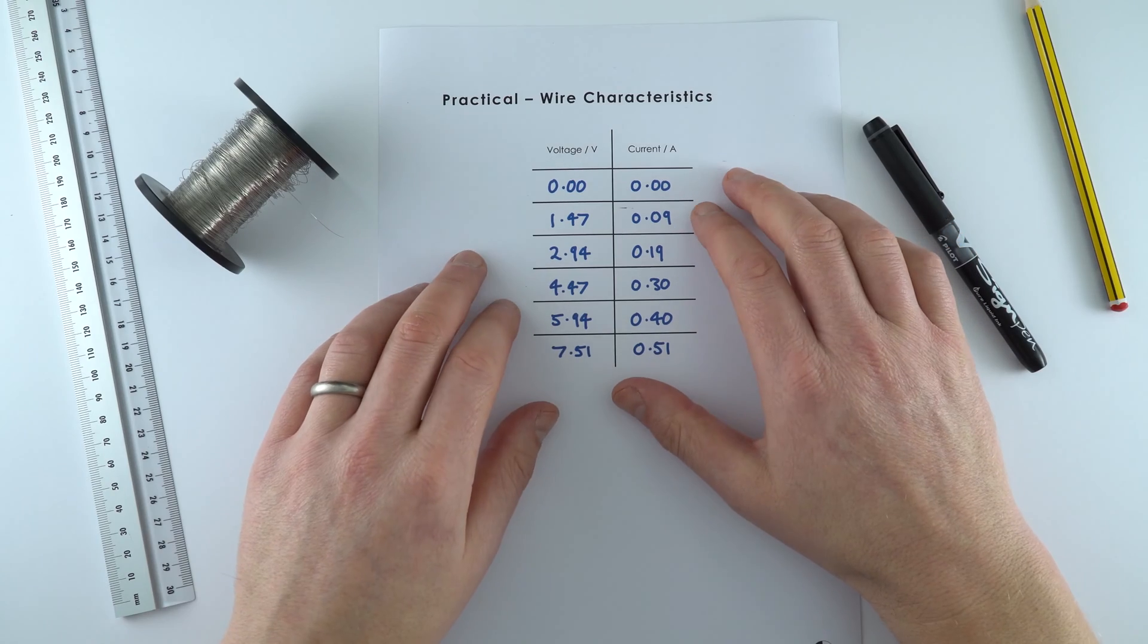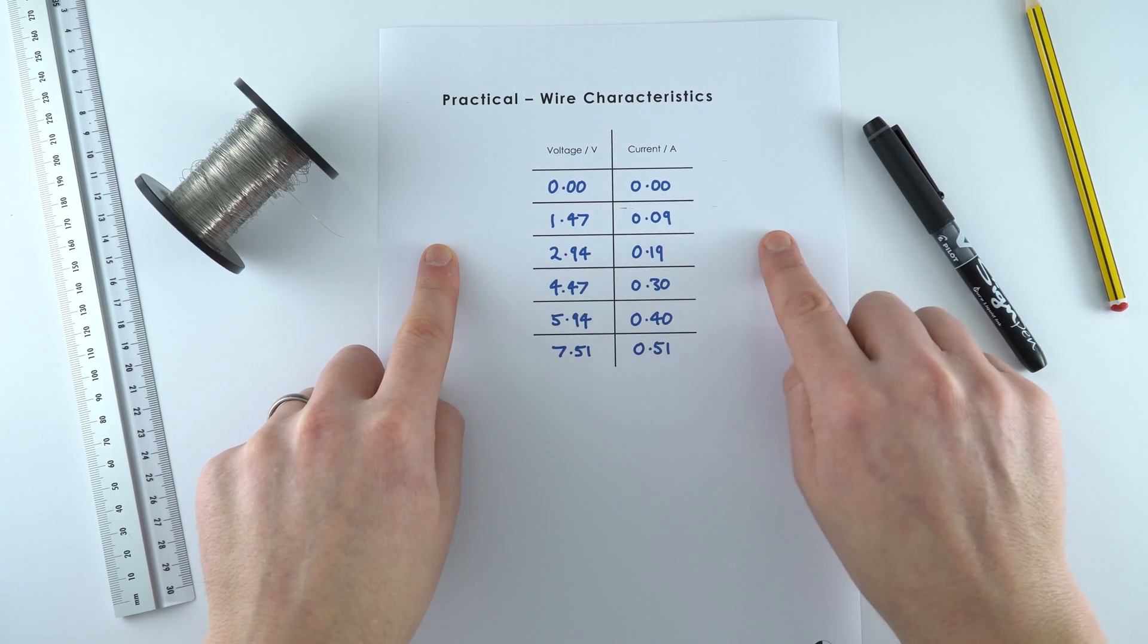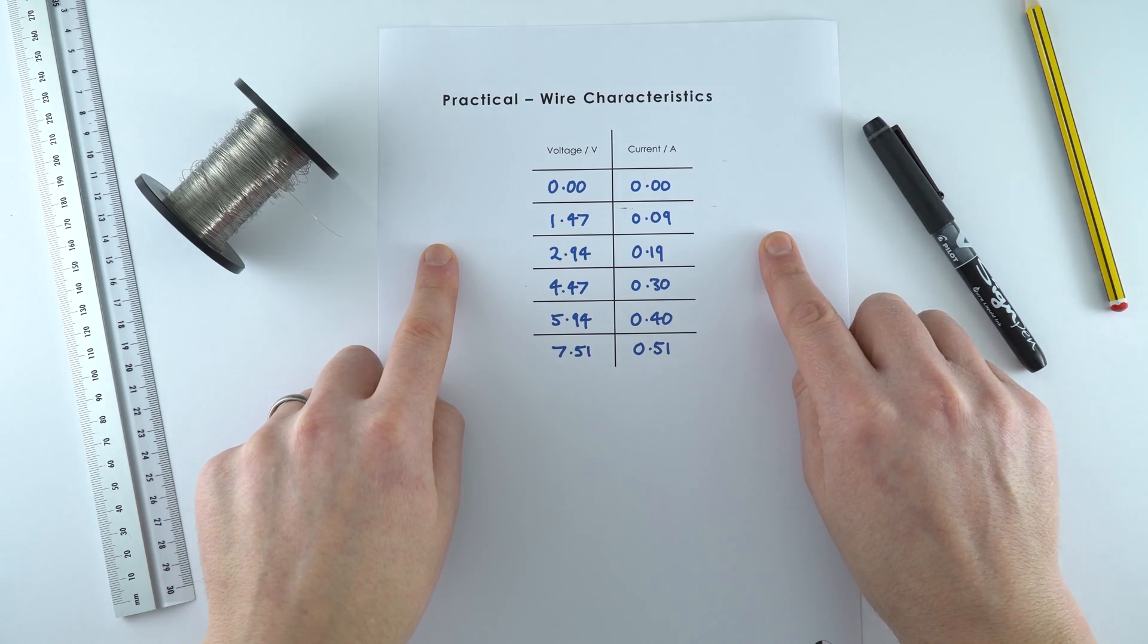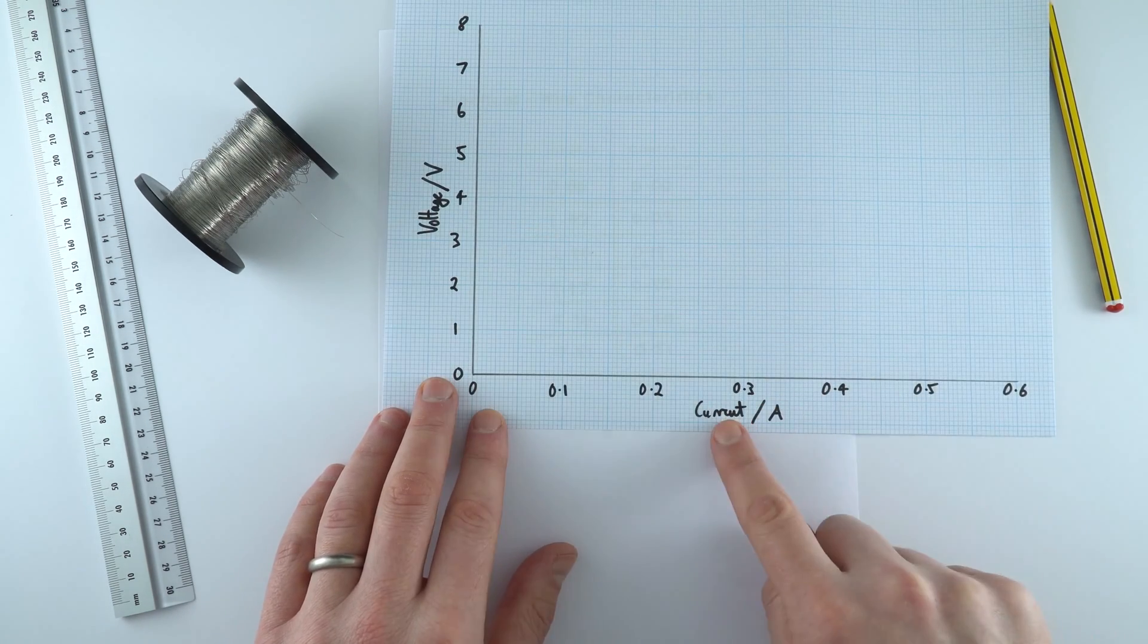So I'm now going to plot this on a graph where I've got voltage on the y-axis and current on the x-axis. So these are the axes I've got, I've got the voltage here, the current there.